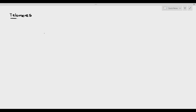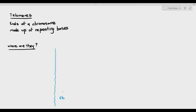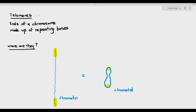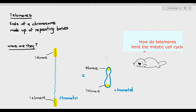What exactly are telomeres? Telomeres are basically the ends of a chromosome made up of repeating bases. They are located at the end of the chromosomes — they can be at the end of the chromatin, where I'm highlighting it in yellow, or also at the end of the chromatid, also highlighted in yellow. Remember, the chromatin and chromatid are actually the same, except one is in their uncoiled form, which is the chromatin, and the chromatid is its supercoiled form. So one of the important questions here is, how do telomeres actually limit the mitotic cell cycle?